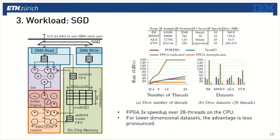Looking at the performance, I'm showing the data consumption rate on the y-axis. The left plot shows the rate against the number of threads; the right plot shows it against different datasets. We get a significant performance advantage — around 3x over a 28-threaded high-end CPU implementation. For small-dimensional datasets, the advantage is less pronounced because the pipeline cannot be entirely filled.